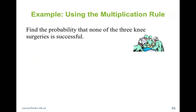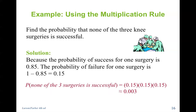Find the probability that none of the three surgeries are successful. To find this, we calculate one minus 0.85 for each surgery, then multiply the three together. The likelihood that all three surgeries are not successful is 0.003.